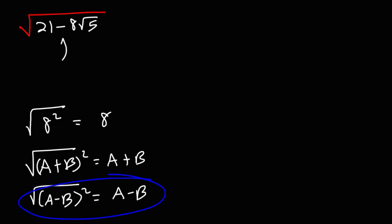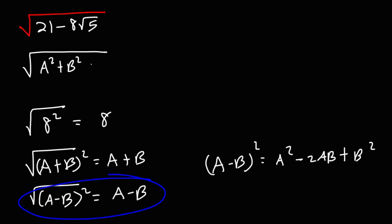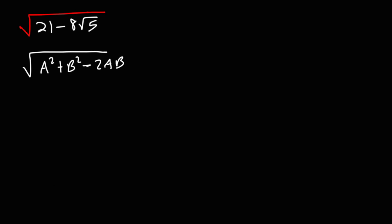We do have a minus sign, and (a - b) squared is equal to a squared minus 2ab plus b squared. So we're going to check to see if this is in the form a squared plus b squared minus 2ab, since the minus sign comes after the 21. Here's how you can check it: 8 square root 5 has to equal 2ab.